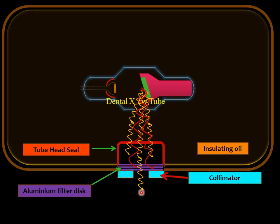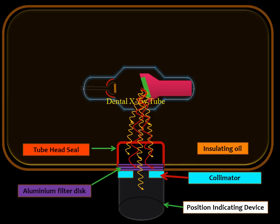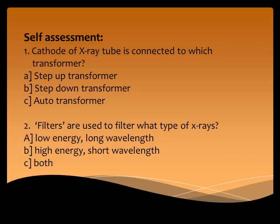Now we need to add something called a position indicating device. This is a cylinder which helps to aim the x-rays towards the patient. Self-assessment for the students.